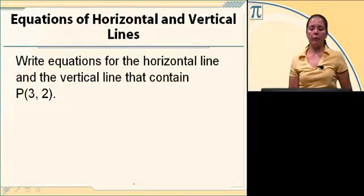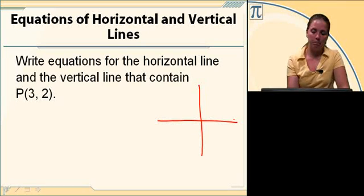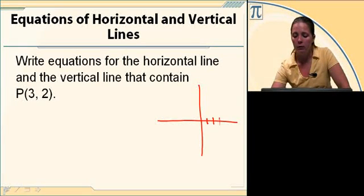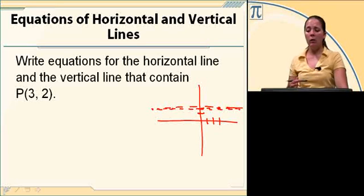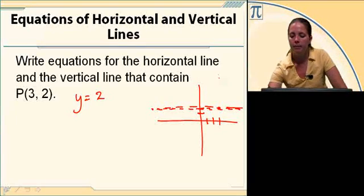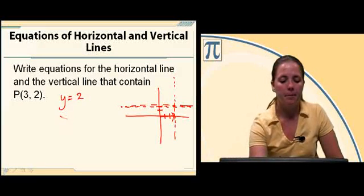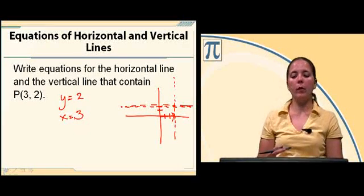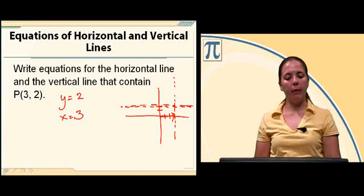Write the equations for the horizontal line and the vertical line that contain the point 2, 3. The point is over 3 and up 2. The horizontal line goes from left to right at Y equals 2. The vertical line goes up and down at X equals 3. So the horizontal line through point 2, 3 is Y equals 2, and the vertical line through point 2, 3 is X equals 3.